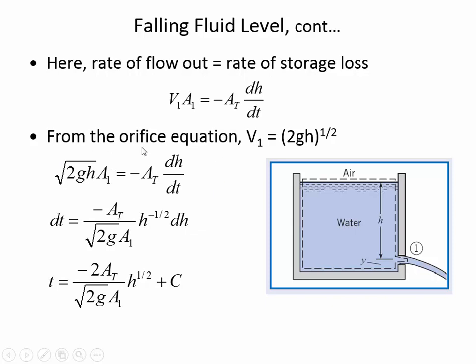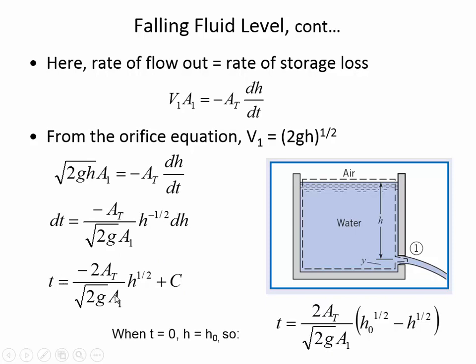The outflow equals the rate of storage loss. Substituting the orifice equation for V1 and rearranging, then integrating with respect to time, we get a formula where at time 0 we have initial water level height h₀. We can find how long it takes to fall from h₀ to some height h. Be very clear: h is not the distance it fell — h is the height of the water above the centerline of the orifice at time t. How far it fell is h₀ minus h.